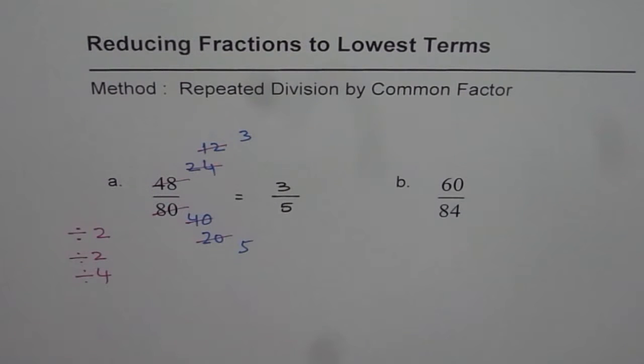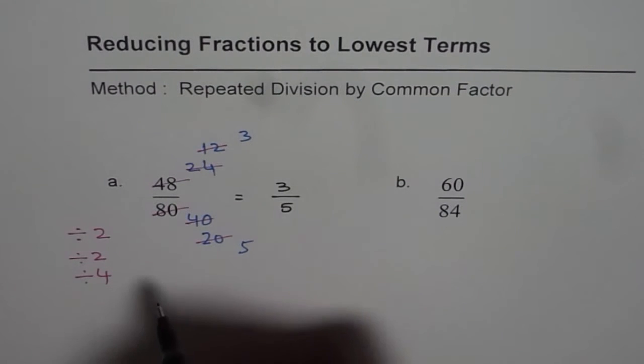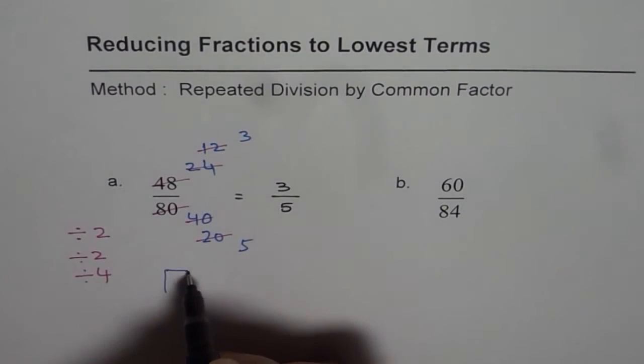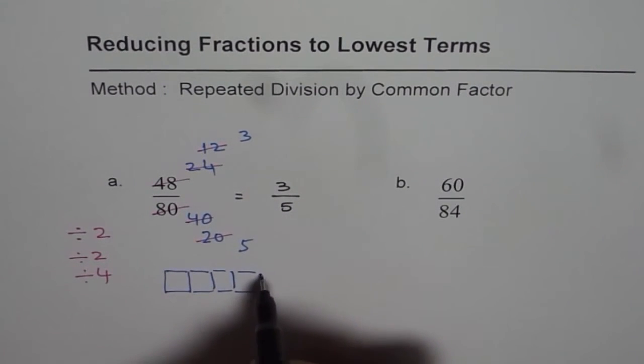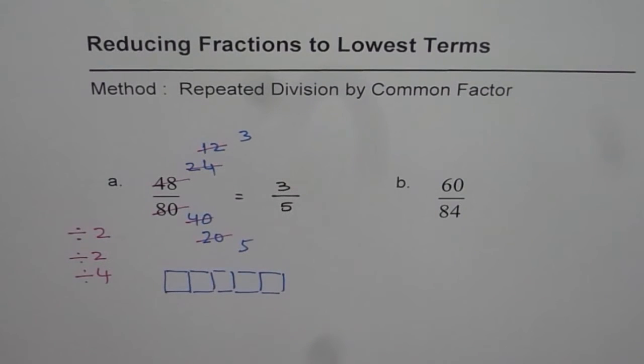So we come to a conclusion that 48 over 80 is 3 out of 5. It means really what? It means that if we have 5 blocks. 1, 2, 3, 4. Well they should be equal in size.